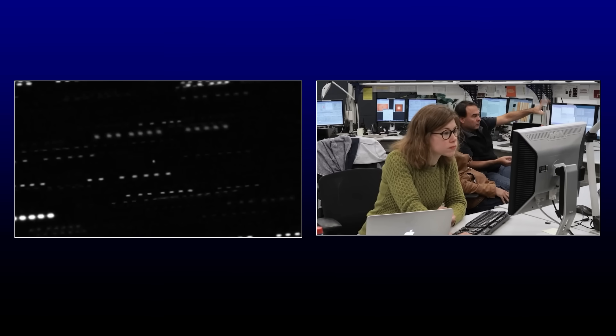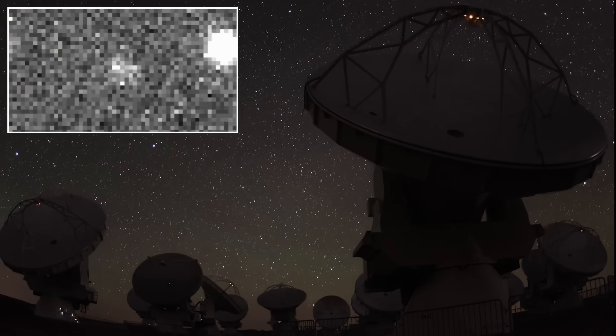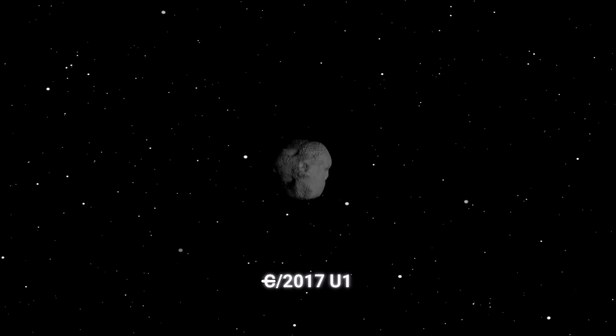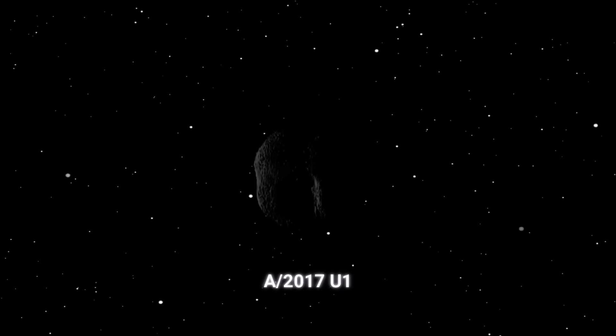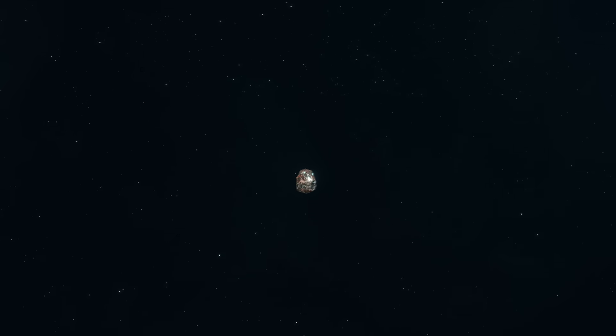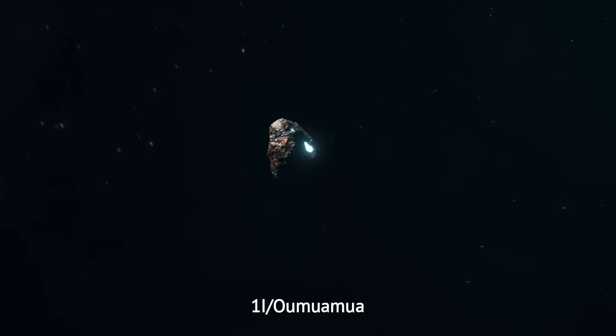In the next 24 hours, the object receives its first name, C/2017 U1, on the assumption that it must be an odd comet. But the very next day, follow-up observations show no cometary tail so the C is struck out, and it becomes A/2017 U1. However, even the asteroid label doesn't hold for long. So the International Astronomical Union coins an entirely new class, I for Interstellar. And the visitor is officially named 1I/Oumuamua, Hawaiian for Scout.